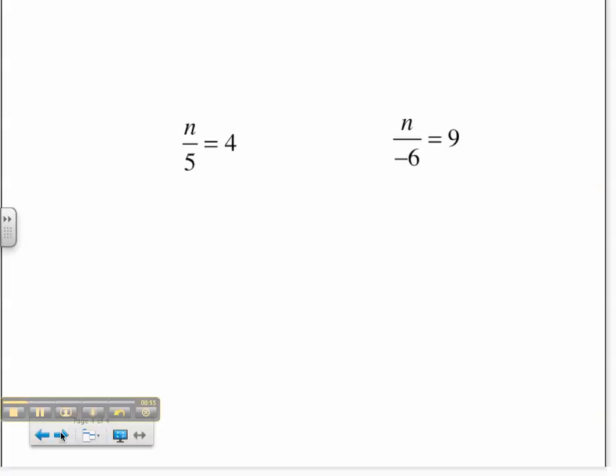Now we'll have Sydney joining us for division equations. The first problem is n divided by 5 equals 4. So you multiply both sides by 5, but then you cross it out because you don't need that. And then 4 times 5 is 20.